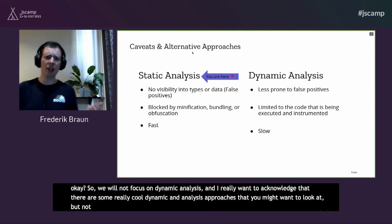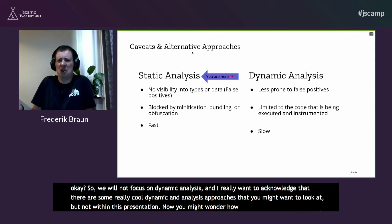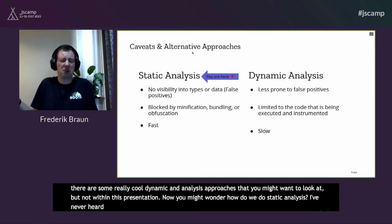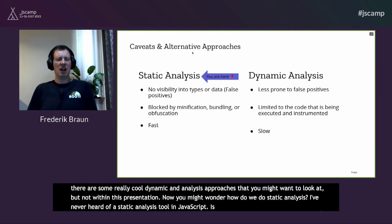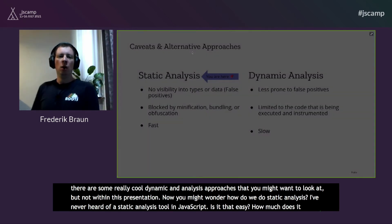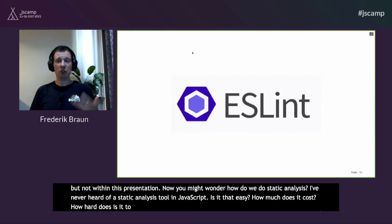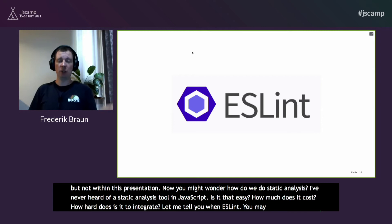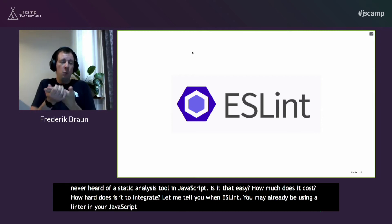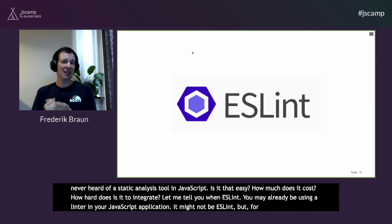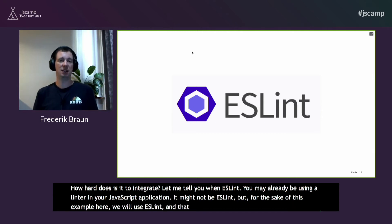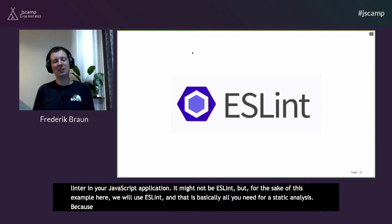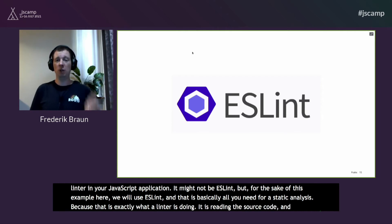How do we do static analysis? You may already be using a linter in your JavaScript application. Let me tell you about ESLint. We will use ESLint for this example, and that is basically all you need for static analysis, because that is exactly what a linter does. It reads the source code and gives you tips on what to do and what not to do.